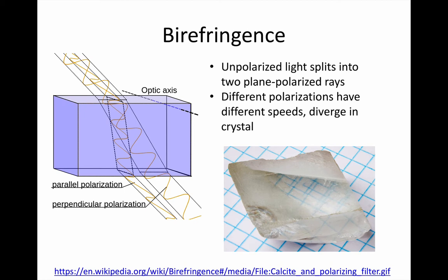The calcite crystal on the right has a double image of the graph paper underneath, and the two rays have perpendicular polarisations and have clearly taken slightly different paths through the crystal.